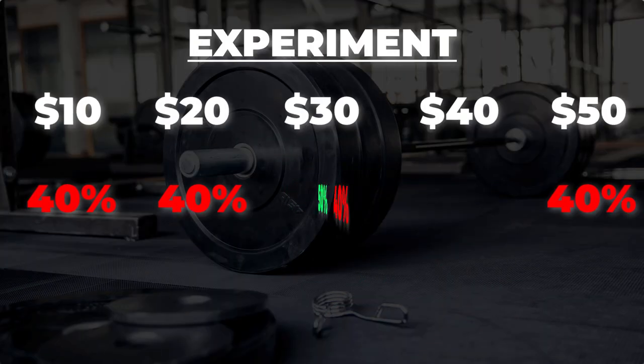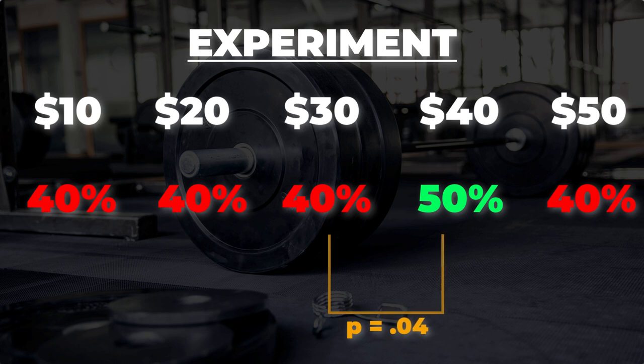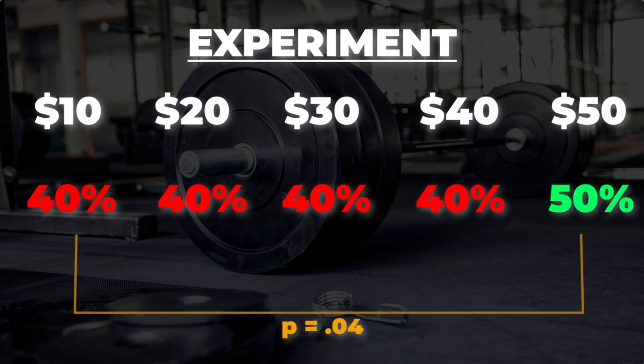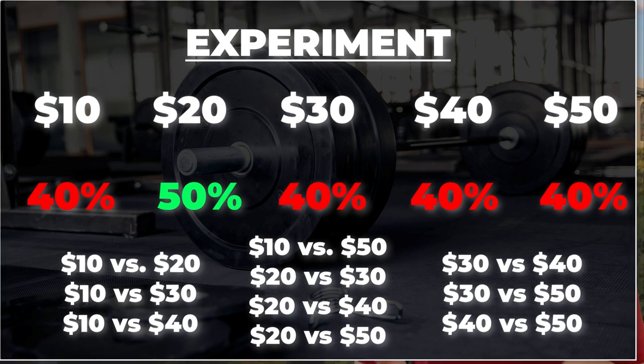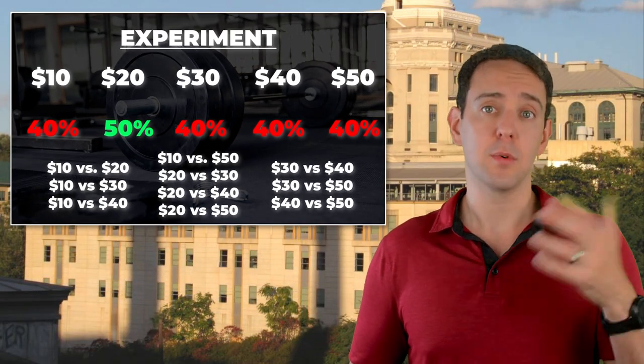Instead, what they are actually doing by dropping the conditions that didn't work is claiming that any combination of two conditions which showed that more money resulted in more gym attendance would let them publish their results. If $40 resulted in more gym attendance than $30, they'd write the same basic paper. If $50 resulted in more than $10, same thing — $20 more than $10, same thing again. In fact, there are 10 possible combinations of results that they would consider a success. The problem is that when researchers have the latitude to pick which comparison they will report only after seeing the results, they are unfairly giving themselves extra chances to be successful. And this all has to do with how p-values work.